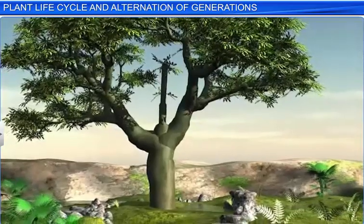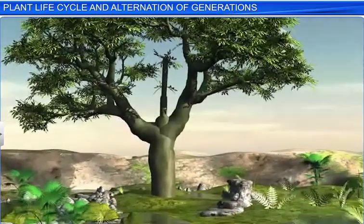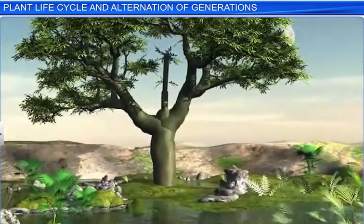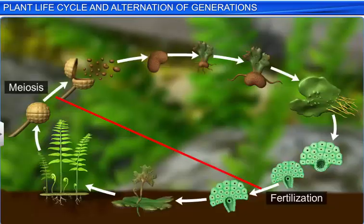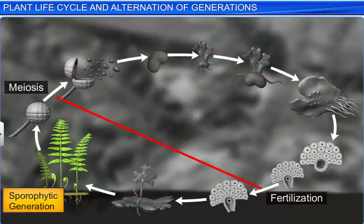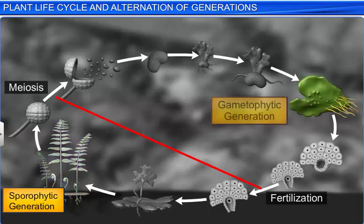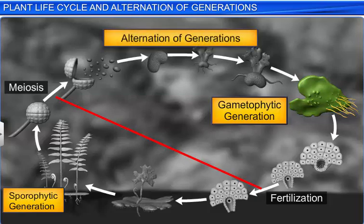If you observe the life cycle of any sexually reproducing plant, you will notice that it alternates between a sporophytic generation and a gametophytic generation. This is termed as alternation of generations.